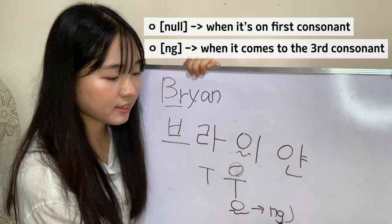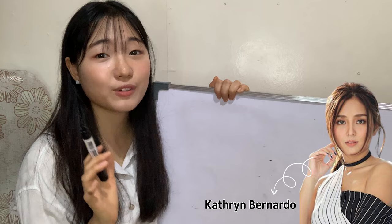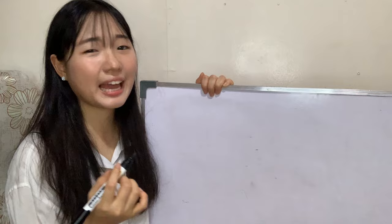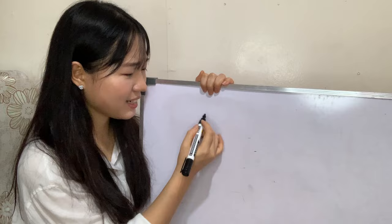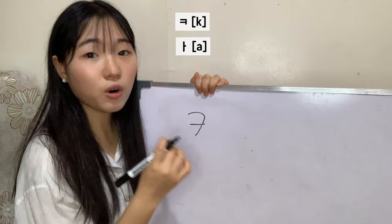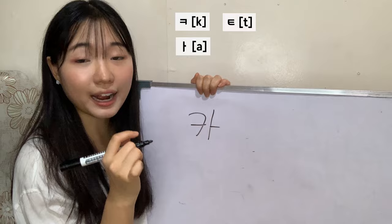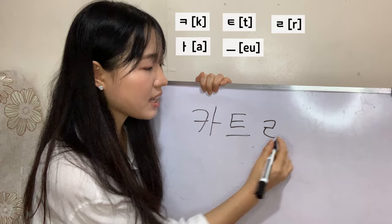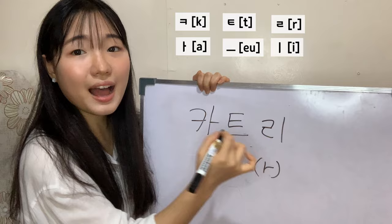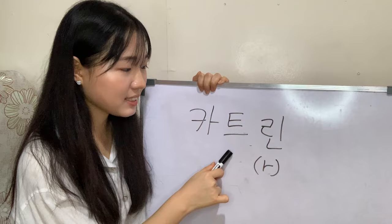Do you know Katrin? She's very famous in the Philippines. Let's try to write her name in Korean. When we say Katrin, we hear K sound, so Ka — with the A sound. Then T — 'T' with a U sound. Then Ri — R sound with I. And finally N — so we get Ka-T-Rin. You got it?